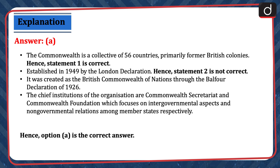The Commonwealth is a collective of 56 countries, primarily former British colonies. Hence, statement 1 is correct. It was established in 1949 by the London Declaration. Hence, statement 2 is not correct. It was created as the British Commonwealth of Nations through the Balfour Declaration of 1926. The chief institutions of the organization are the Commonwealth Secretariat and Commonwealth Foundation, which focus on intergovernmental aspects and non-governmental relations among member states respectively.